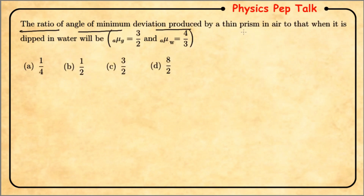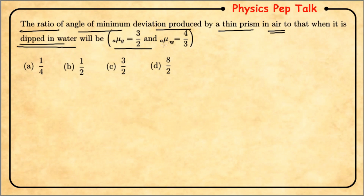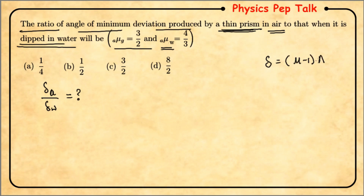Next question: find the ratio of angle of minimum deviation produced by a thin prism in air to that when it is dipped in water. Given: refractive index of glass with respect to air μ_ga = 3/2, refractive index of water with respect to air μ_wa = 4/3. For a thin prism, δ = (μ - 1) × A, where μ is the refractive index of glass with respect to the surrounding medium.